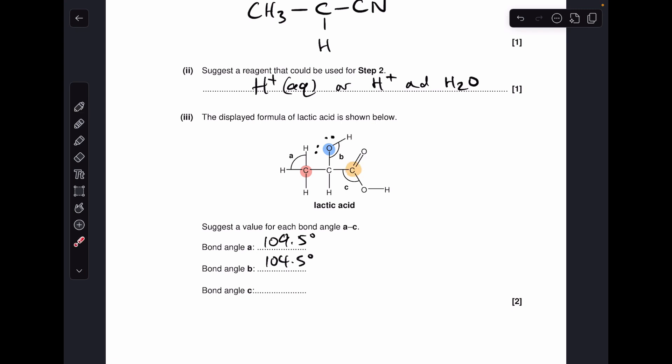And moving on to bond angle C, around this highlighted carbon atom. So again, just count up the electron regions, one, two, and the double bond counts as one, so three. There's no lone pairs to worry about, so we're going to get equal repulsion around that, which gives us a 120 degree angle around that carbon.